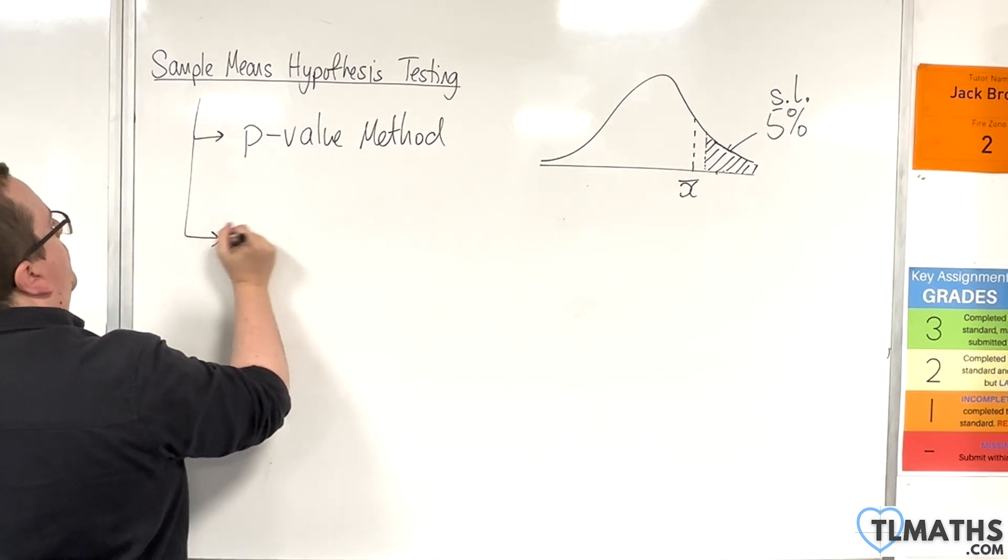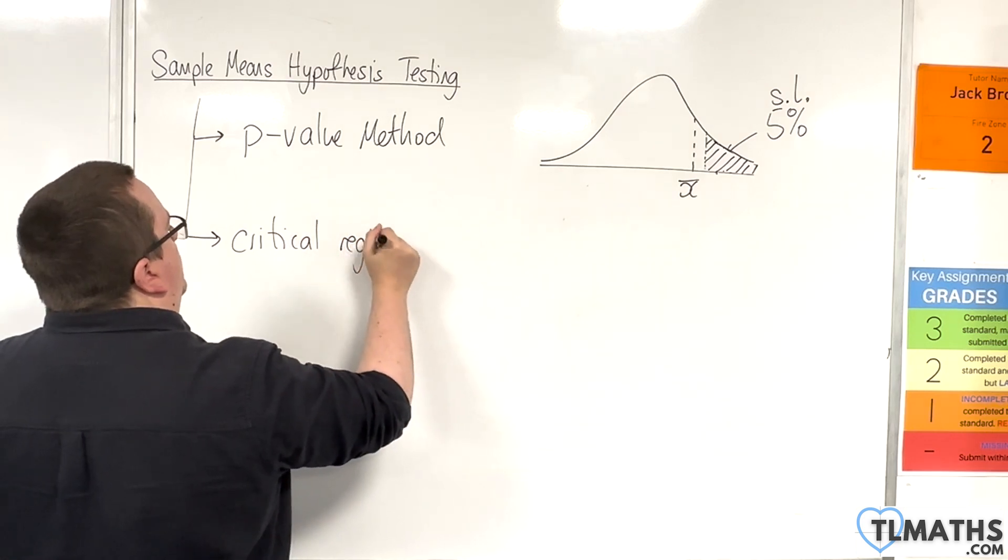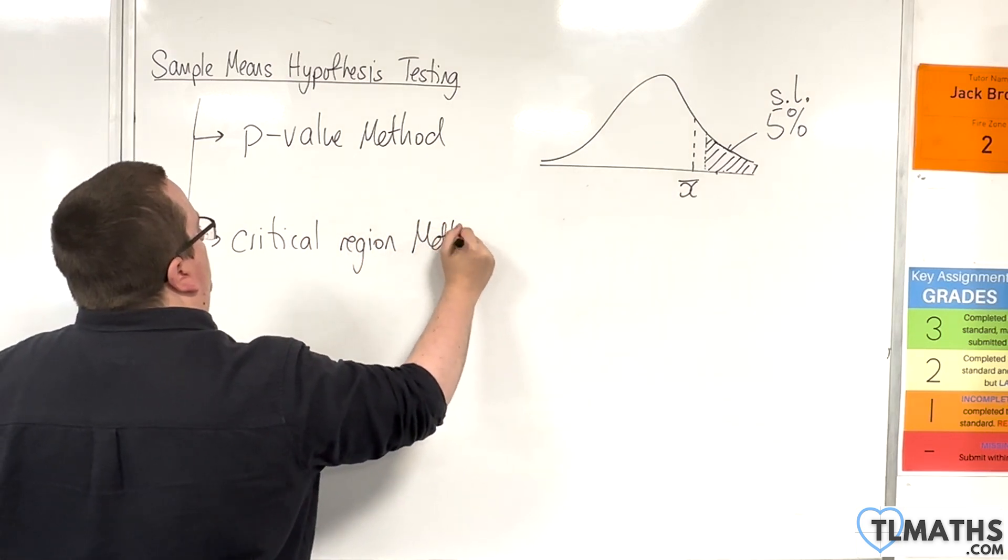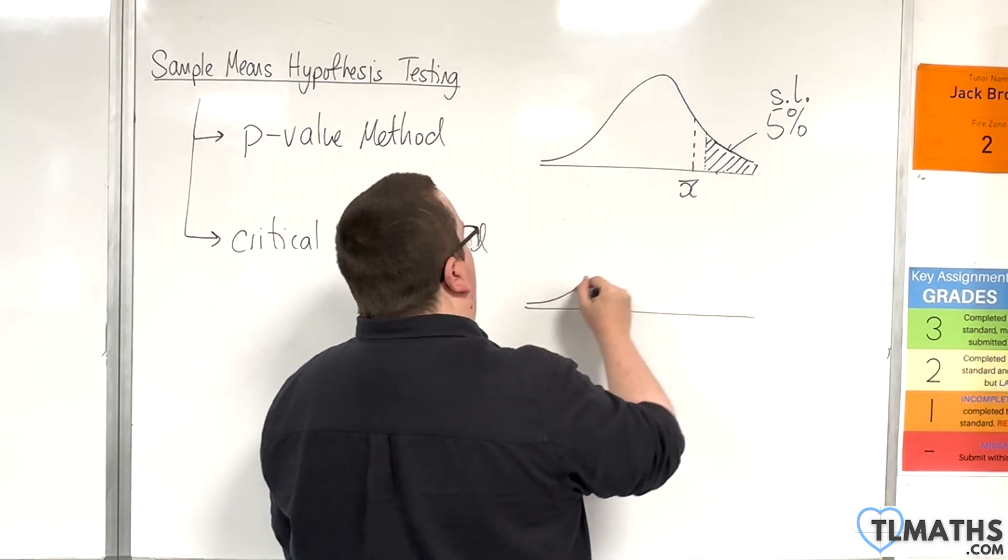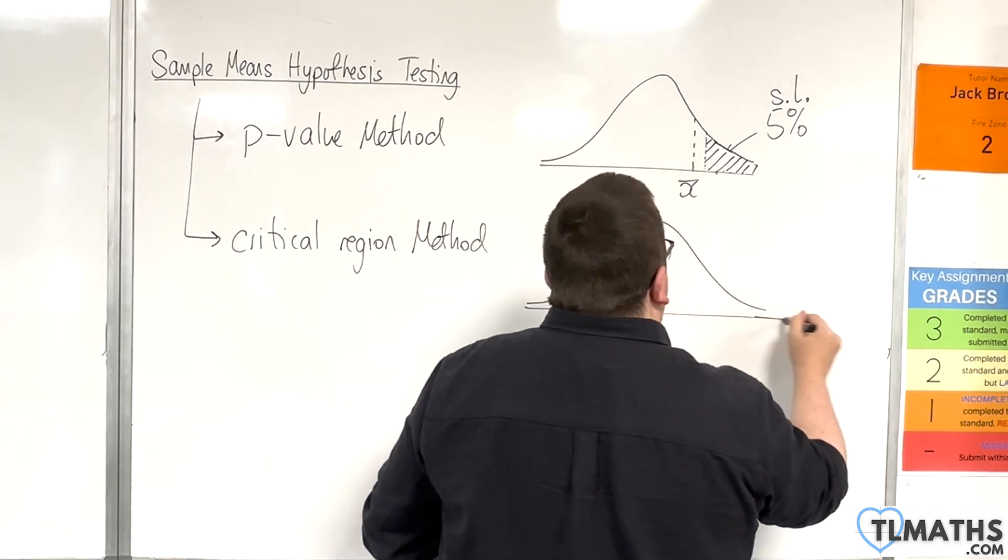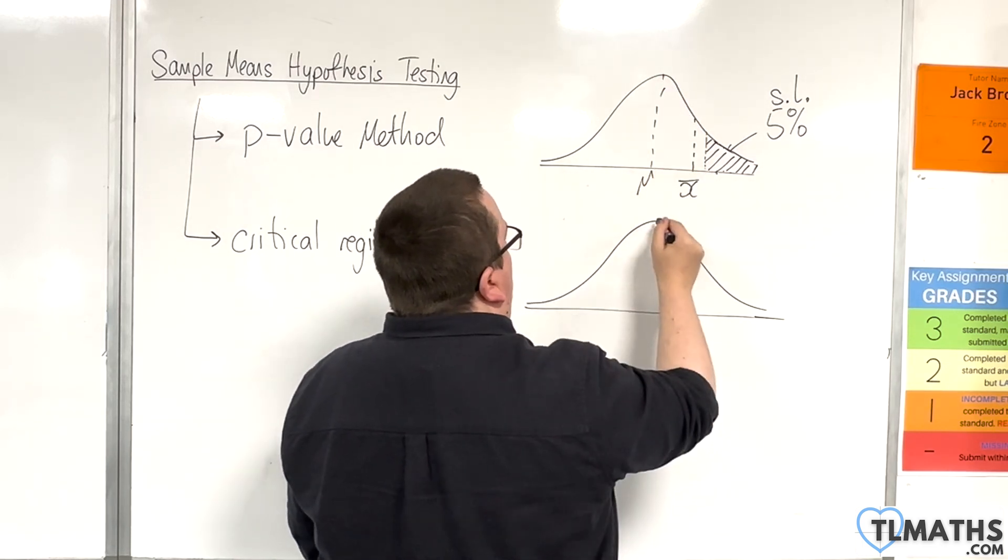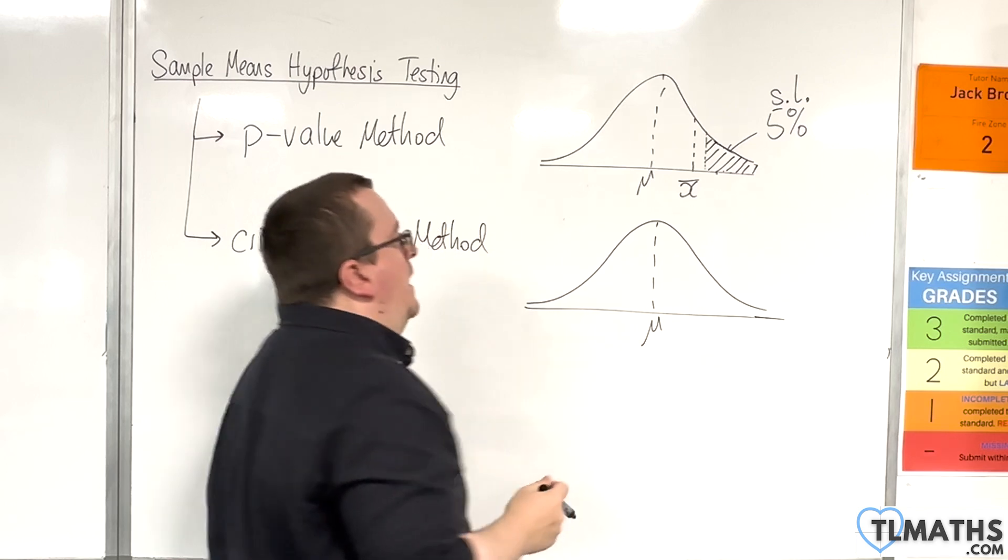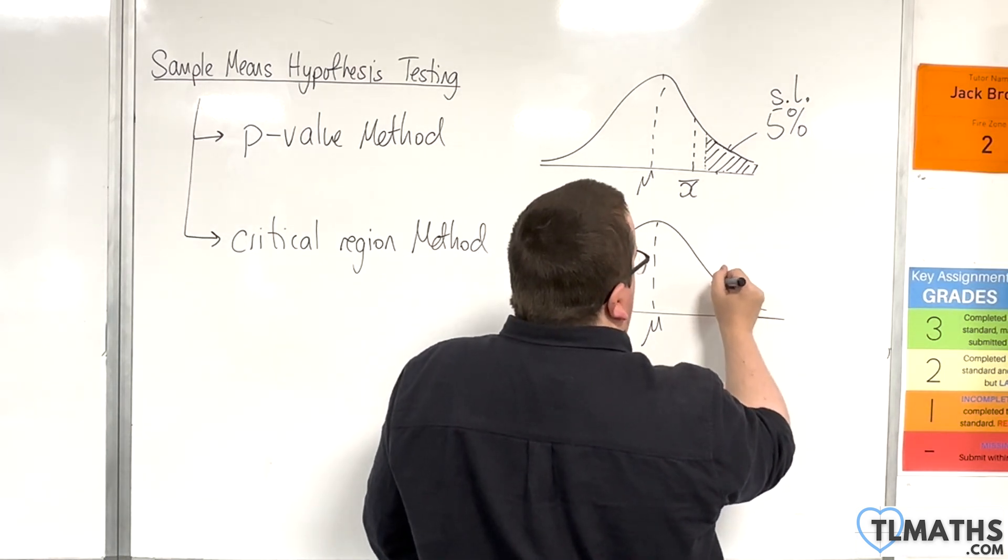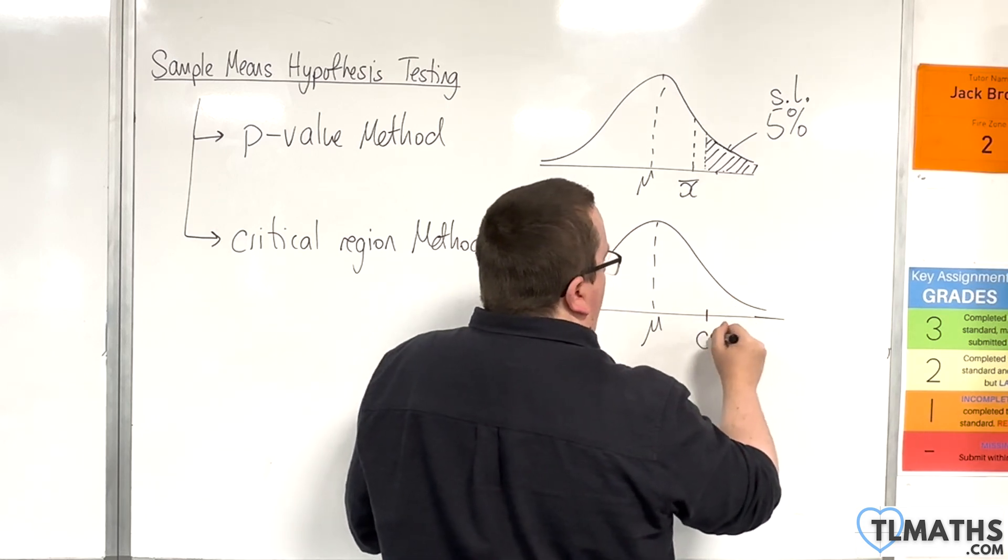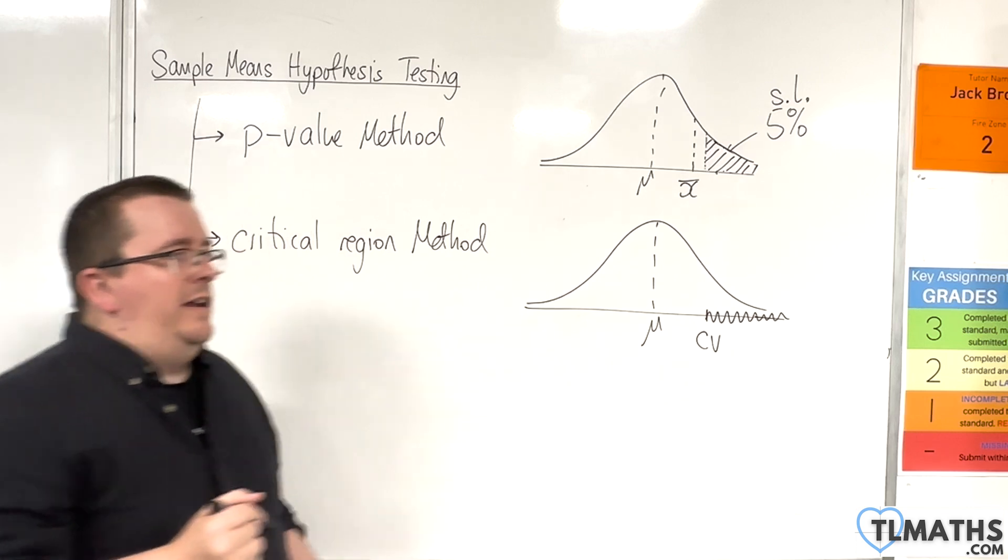Then we've got the critical region method. Now, the critical region, same idea, really. Here is your normal distribution. I'm going to identify this as mu. It's mu. Well, the critical region is somewhere, right? So, here is your critical value, and that is your critical region.